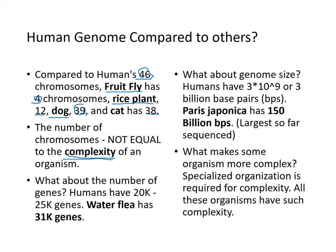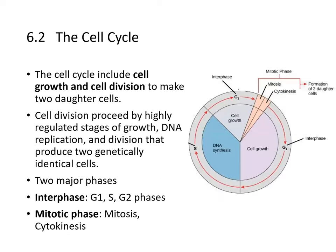Humans have about 20,000 to 25,000 genes, while the water flea has 31,000. The human genome has about 3 billion base pairs, whereas Paris japonica has 150 billion base pairs — the largest genome sequenced so far. Specialized organization is required for complexity, and what makes organisms more or less complex is a question for scientists for generations to come.